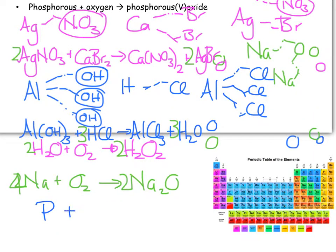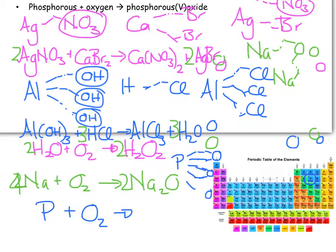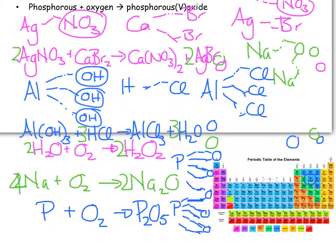Last one: phosphorus plus oxygen O₂ (diatomic) gives phosphorus 5 oxide. Phosphorus has valency 5, oxygen has valency 2. Using the criss-cross method this gives P₂O₅. Balancing gives an odd-even problem, so find the lowest common denominator — put a 4 in front of P and a 5 in front of O₂: 4P + 5O₂ → 2P₂O₅. Four phosphoruses and 10 oxygens on each side. Done!